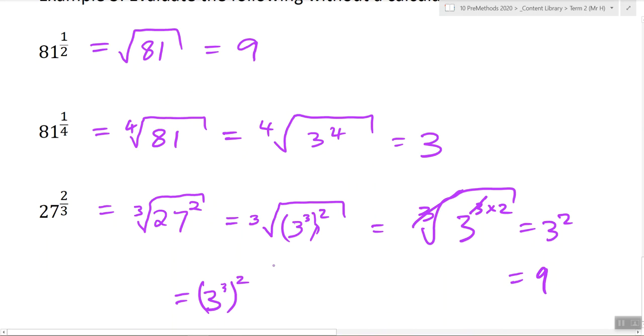And the cube root is the same as what fraction? 1 over 3. 1 over 3. So now we have 3 to the power of 3 times 2 times a third.